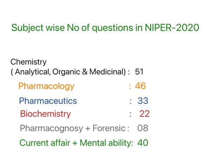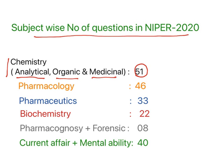Let's begin. Subject-wise number of questions in NIPER 2020: Chemistry — which includes analytical chemistry, pharmaceutical analysis, organic chemistry, and medicinal chemistry — has 51 questions. Pharmacology has around 46 questions, pharmaceutics has 33 questions, and biochemistry has 22 questions, which is quite high.